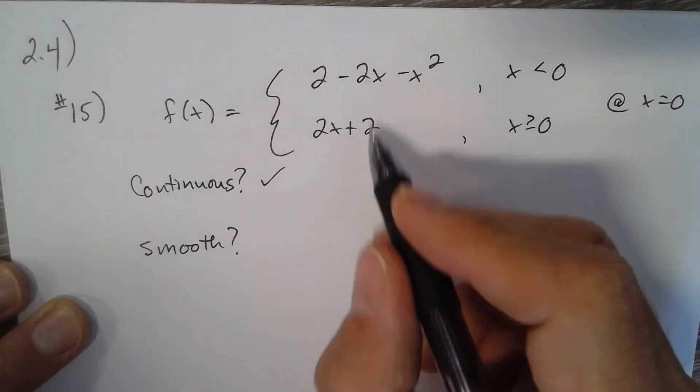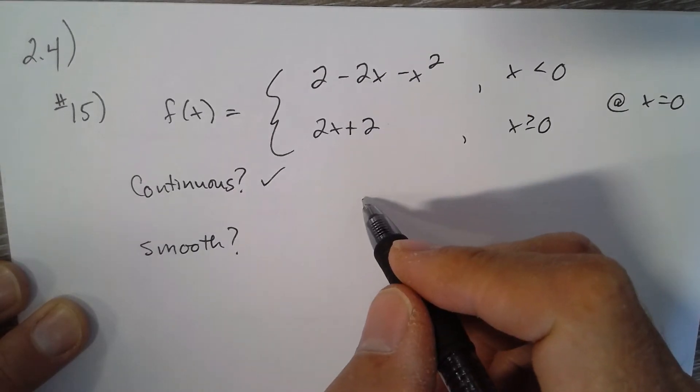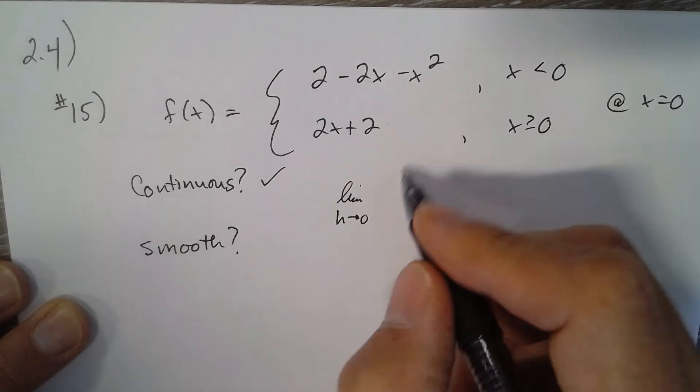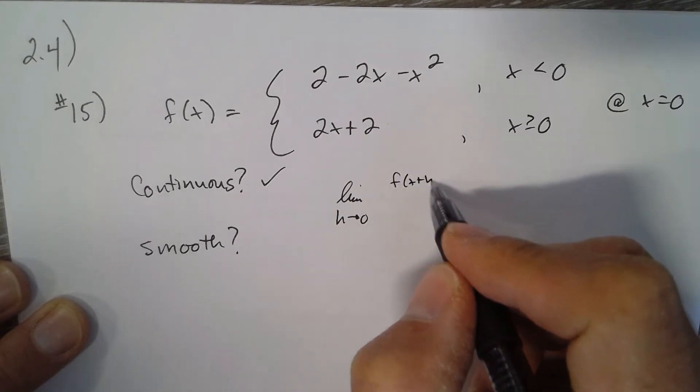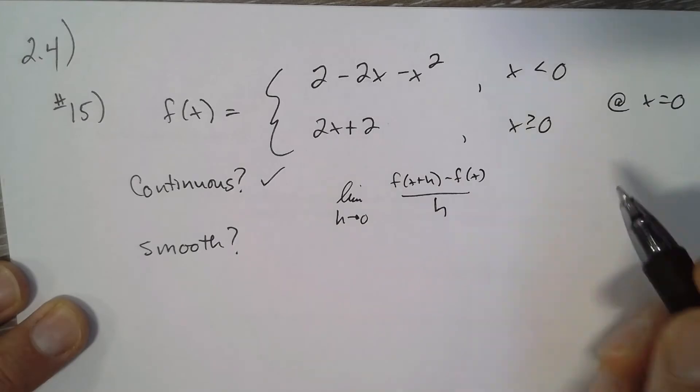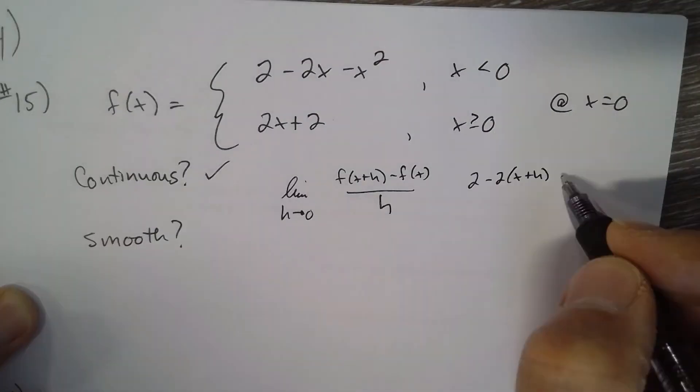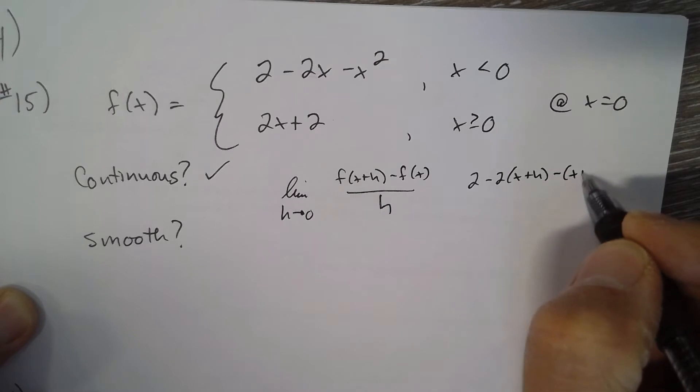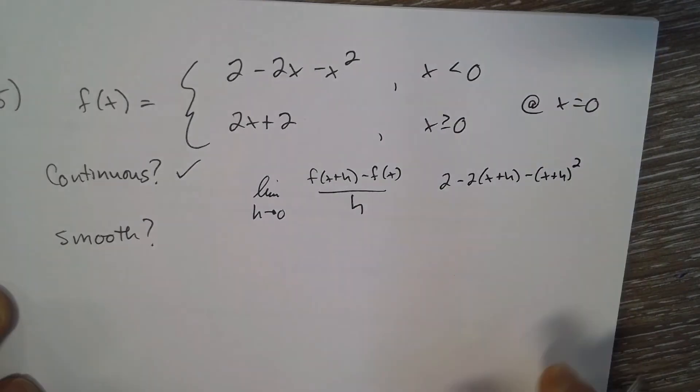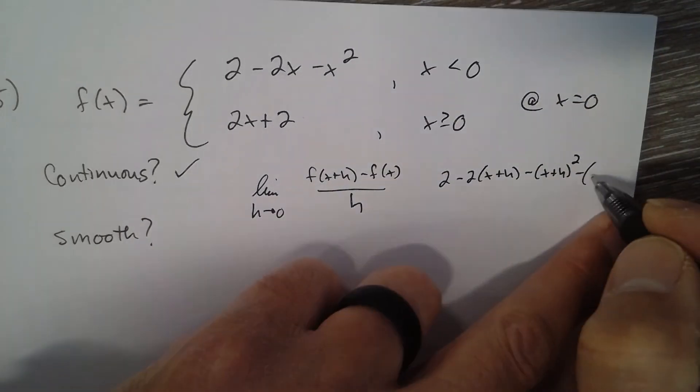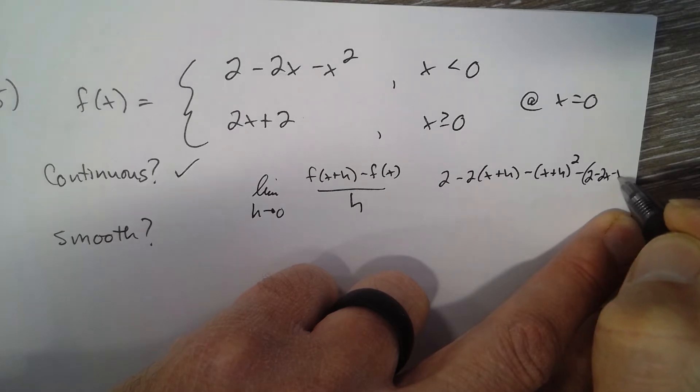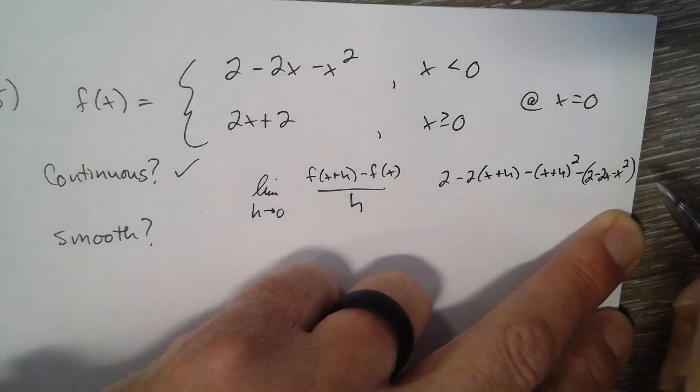Finding the derivative using the limit definition: the limit as h goes to zero of f(x+h) minus f(x) over h. So it would be 2 minus 2x plus h minus x plus h squared, minus f(x), which is 2 minus 2x minus x squared.